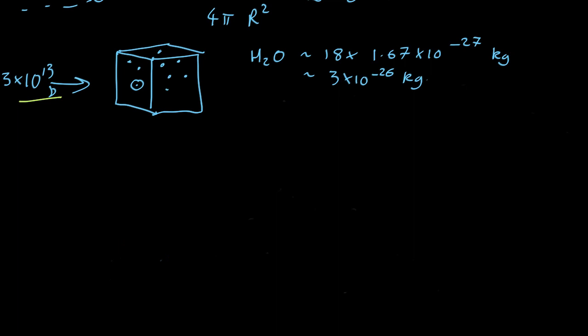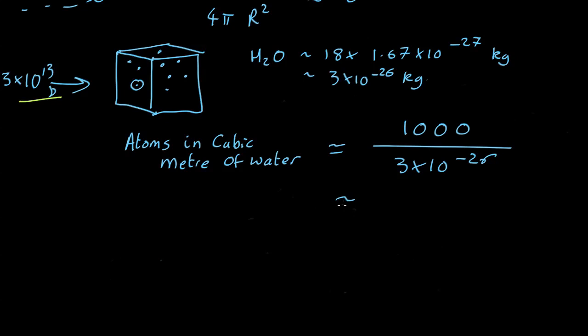So how many atoms are there in a cubic metre of water? Well, that's going to be about the mass of the water divided by the mass of each molecule, which comes out as about 3 by 10 to the 28 atoms. So a lot of atoms in a cubic metre.